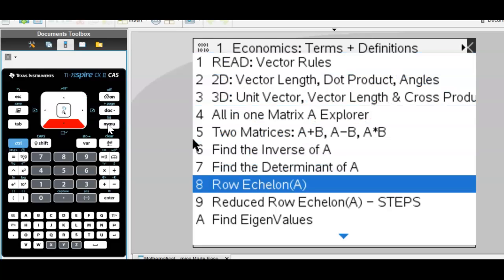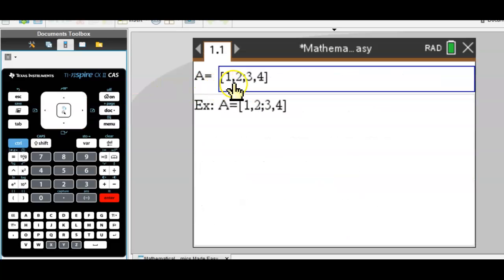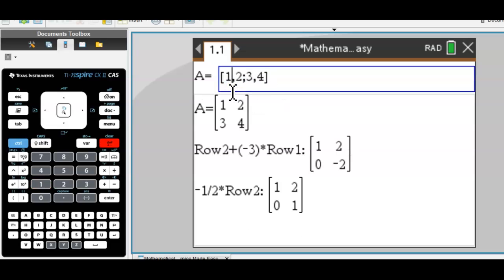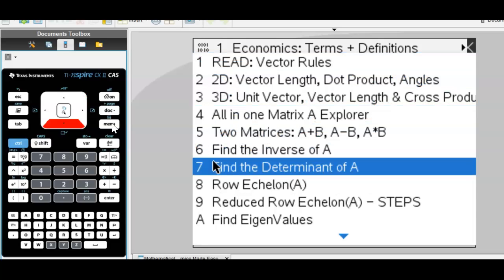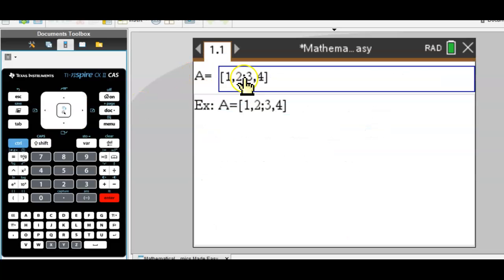And if you need to do row echelon computations, you can do that right here until you get the row echelon version. Of course, you can also get the reduced row echelon version right here.